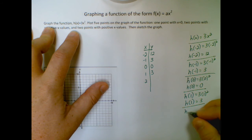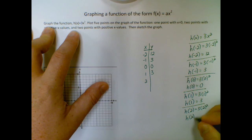And last but not least, a positive two. Two squared is four times three is twelve.